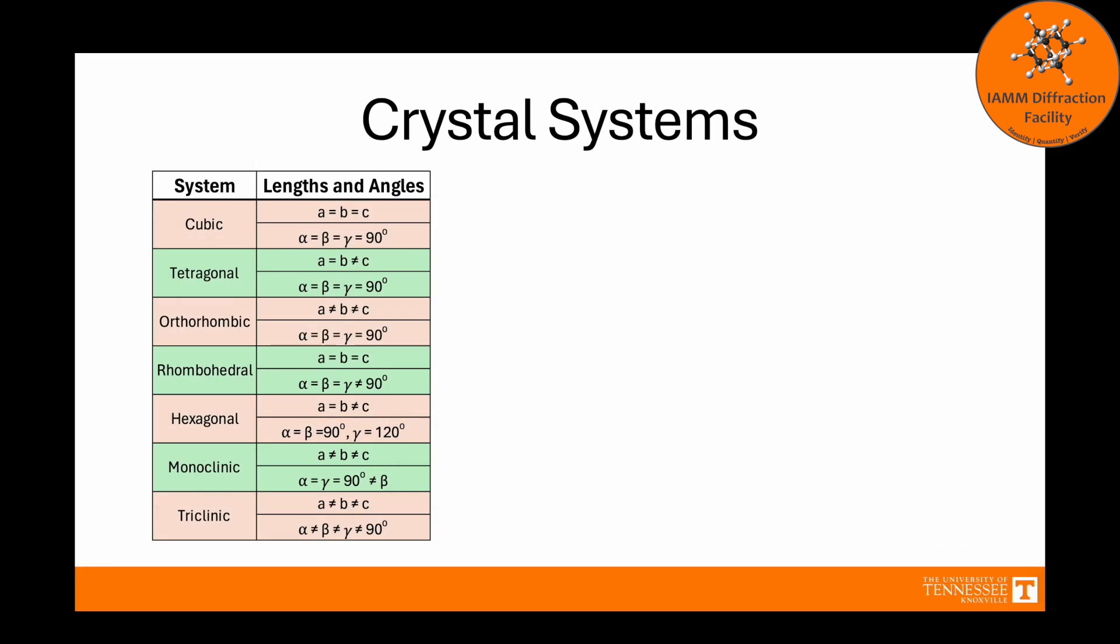Let's look more at those crystal systems. There are seven in total, and you see them all over here. This names the system and the corresponding relationships between the lengths and angles. Let's take a look at these one by one. We'll start off with the simplest, cubic. This is what we saw before, and it is exactly what you would expect from something called cubic. All three edges, A, B, and C are equal, and the angles between the different edges are all 90 degrees.